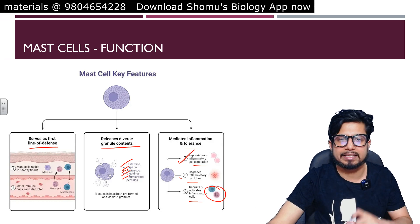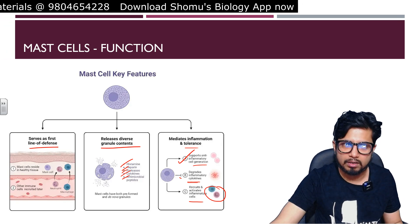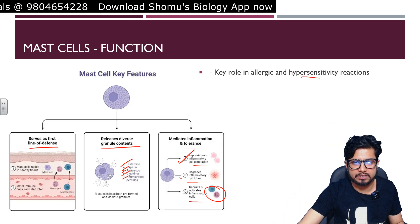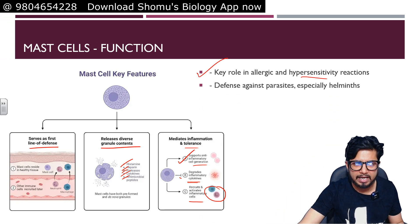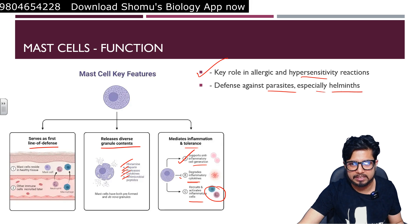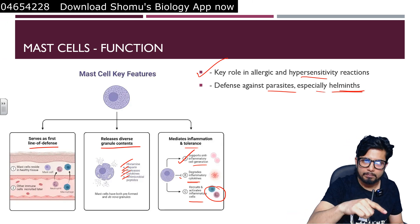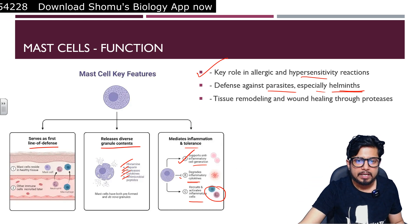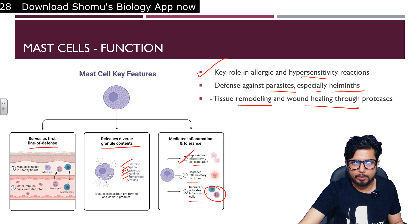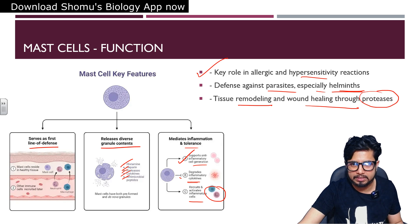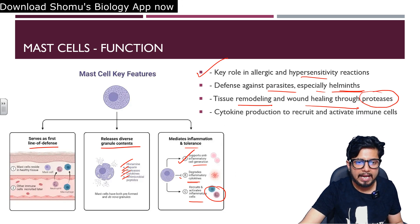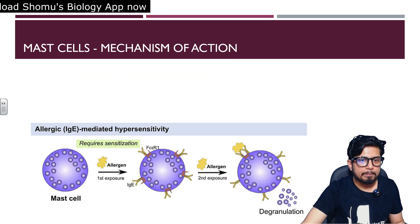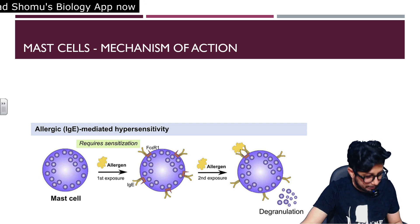Mast cells can recruit and activate more inflammatory cells in the body. Their key role is in allergic and hypersensitivity reactions, defense against parasites especially helminths — also performed by eosinophils — tissue remodeling and wound healing via proteases, and cytokine production to recruit and activate immune cells.